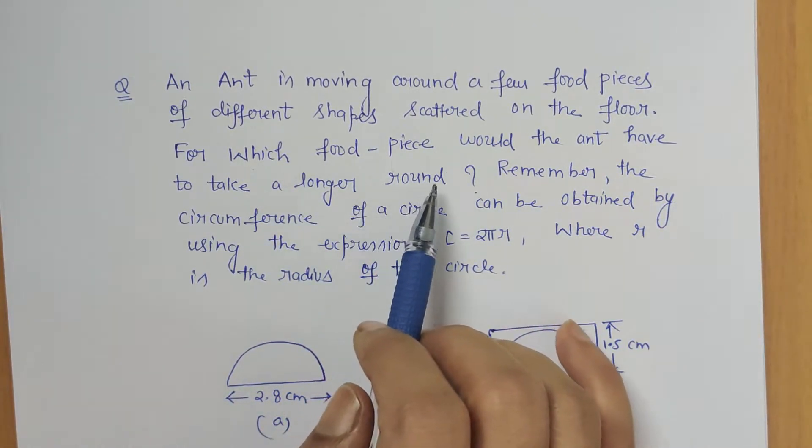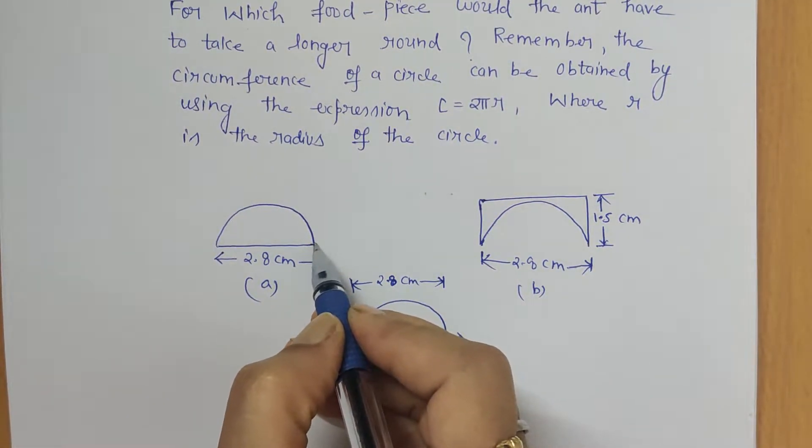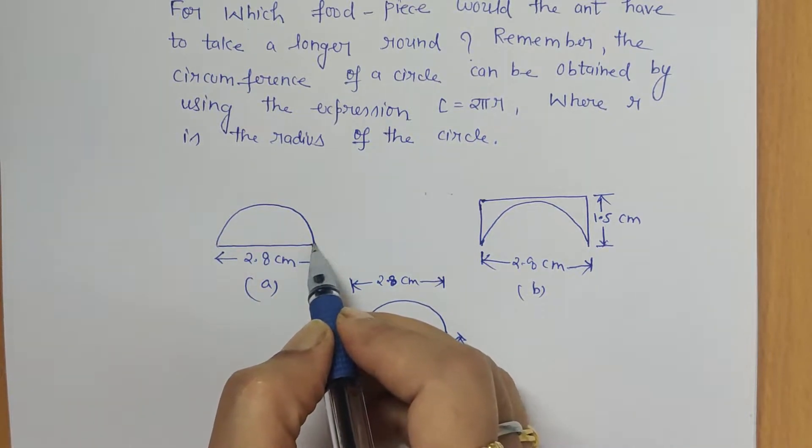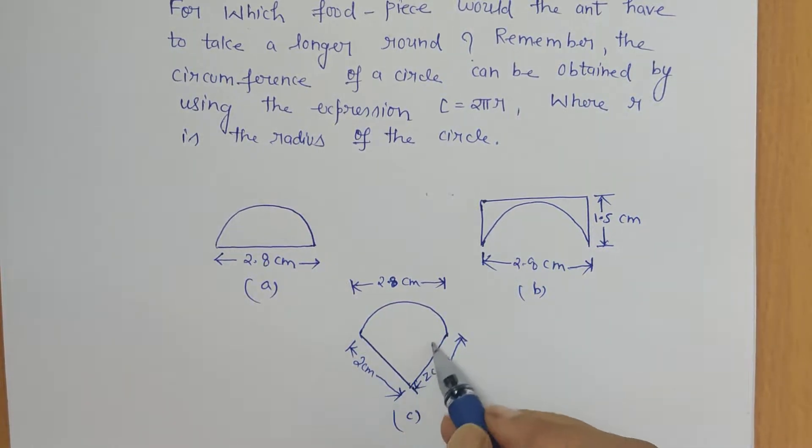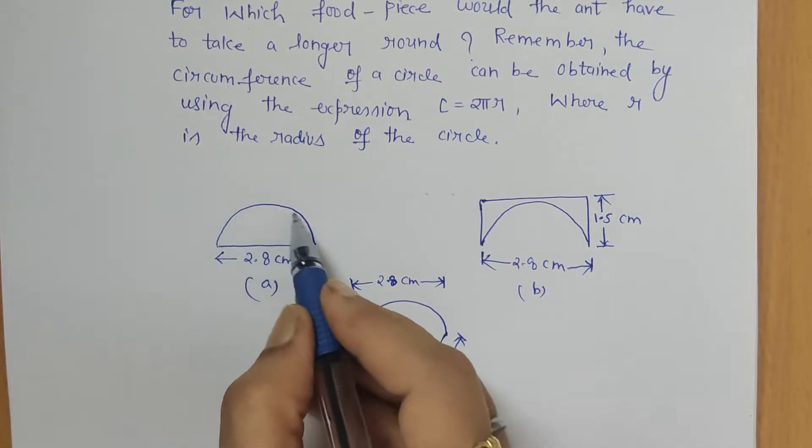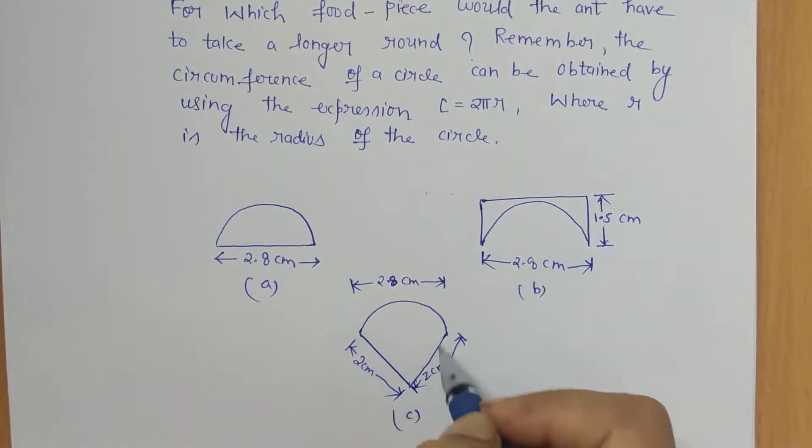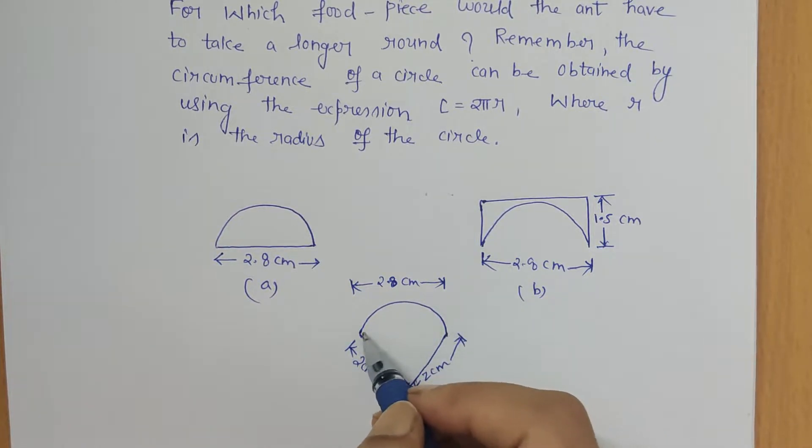The figures given to us are these. Let's say the ant starts from here and it goes like this, then again to the initial point. Similarly from here to here and then this. What you see over here, these are semicircles, right? And for finding the path of the semicircle, the formula is 2πr, but since it is not a complete circle, we will be dividing it by 2.